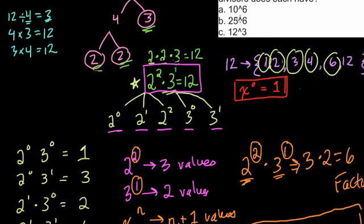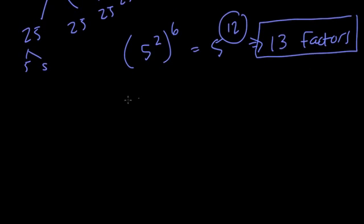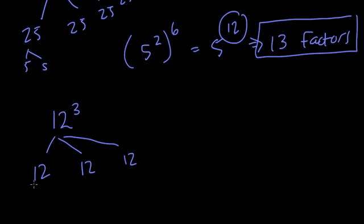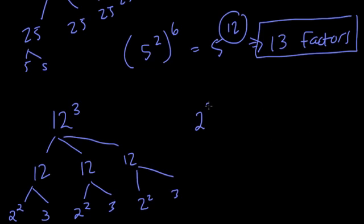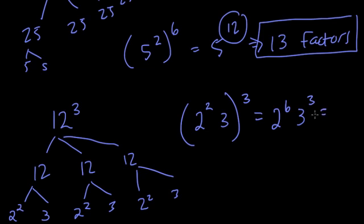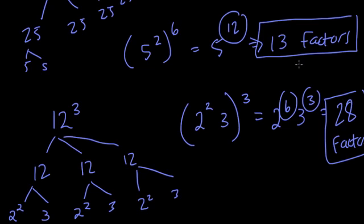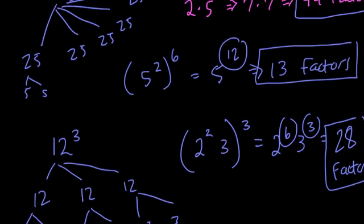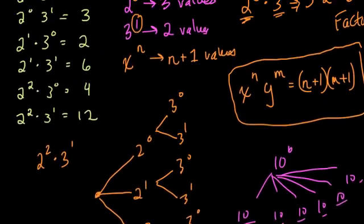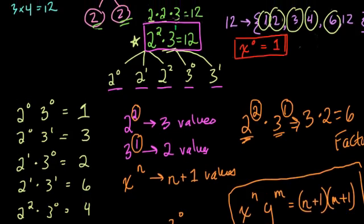That's surprising — you might think the higher the number, the more factors, but that's not how this works. Last, we have 12 to the 3rd. So 12 times 12 times 12. We can break each 12 down into its prime factorization, which we already did — that's 2 squared times 3, and each 12 is 2 squared times 3. We have 2 squared times 3 done 3 times, so this is to the 3rd power. That means we have 2 to the 6th and 3 to the 3rd. So here we have 7 times 4 — that's 28 factors. Not as many as 10 to the 6th, but definitely more than 25 to the 6th, which is a very large number. The idea is that you're looking at combinations of prime factors that allow you to count how many factors any number has.